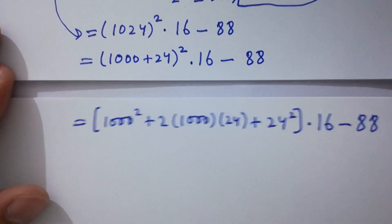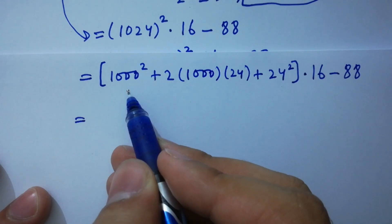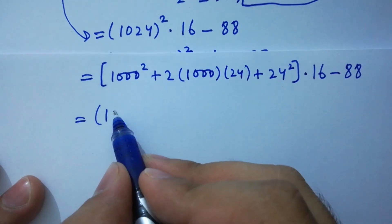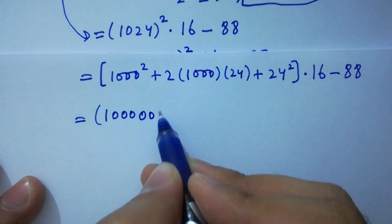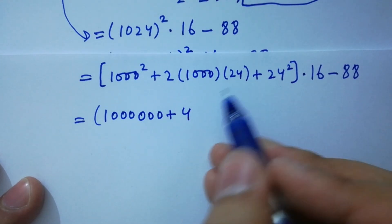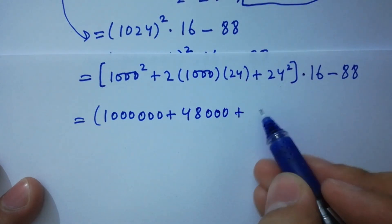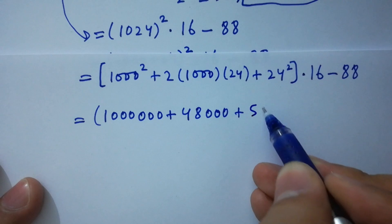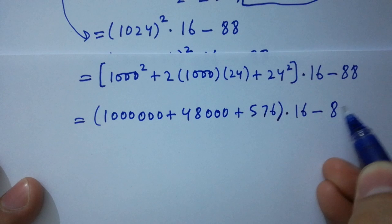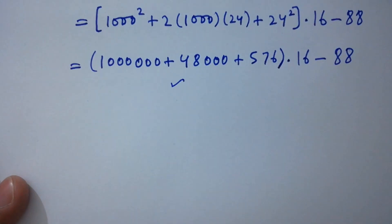Now simplify this. 1000 squared gives us 1 followed by 6 zeros, which is 1,000,000. Then 2 times 1000 times 24 gives 48,000. And 24 squared is 576. So we have 1,000,000 plus 48,000 plus 576, times 16, minus 88.